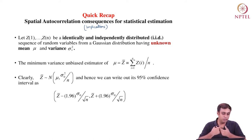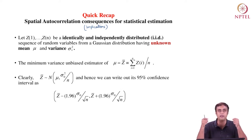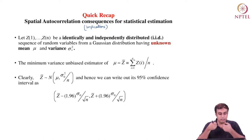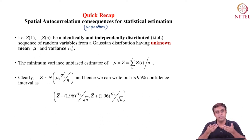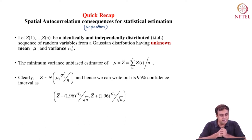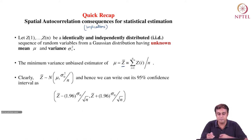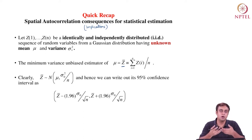Very quickly, since it is a very important topic, what we started with was an IID sequence of values Z1 till Zn — a sequence of data points independently and identically distributed from a Gaussian distribution having unknown population mean mu and variance sigma squared. The minimum variance unbiased estimator of mu was nothing but Z-bar.